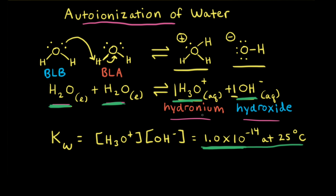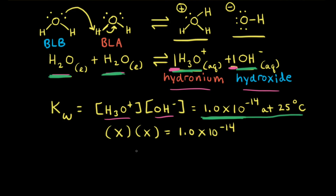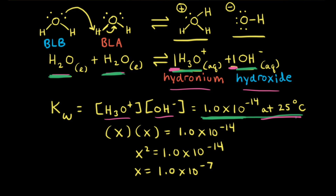Let's solve for the concentration of hydronium ions and hydroxide ions at equilibrium. In the balanced equation, there is a coefficient of one in front of both hydronium and hydroxide, so these two concentrations are equal. Representing each as x: x times x equals 1.0 × 10⁻¹⁴, so x² = 1.0 × 10⁻¹⁴. Taking the square root of both sides, x = 1.0 × 10⁻⁷. Therefore, in pure water at 25°C, [H3O+] = [OH-] = 1.0 × 10⁻⁷ M.